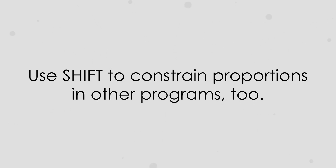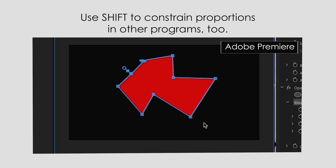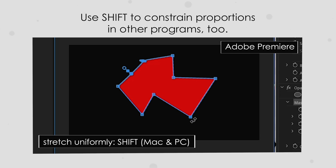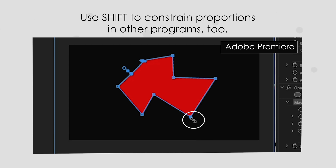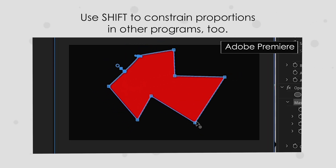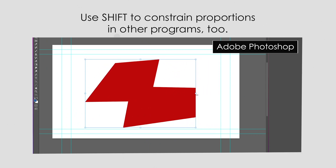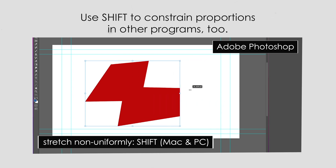Did you know that the Shift key will usually help you modify things uniformly? Say you have a solid and you use the pen tool to create a mask, and you want to make the mask larger. It's the same process as before — hold your cursor by the corner, see that curvy arrow, simply press Shift on both a Mac and a PC, and you'll see your cursor turn to a straight double arrow. Now you can pull downward and it makes the whole shape bigger at once. And try this in other Adobe programs like Photoshop — except in Photoshop, when you drag a corner it already stretches uniformly, and Shift makes it non-uniform.